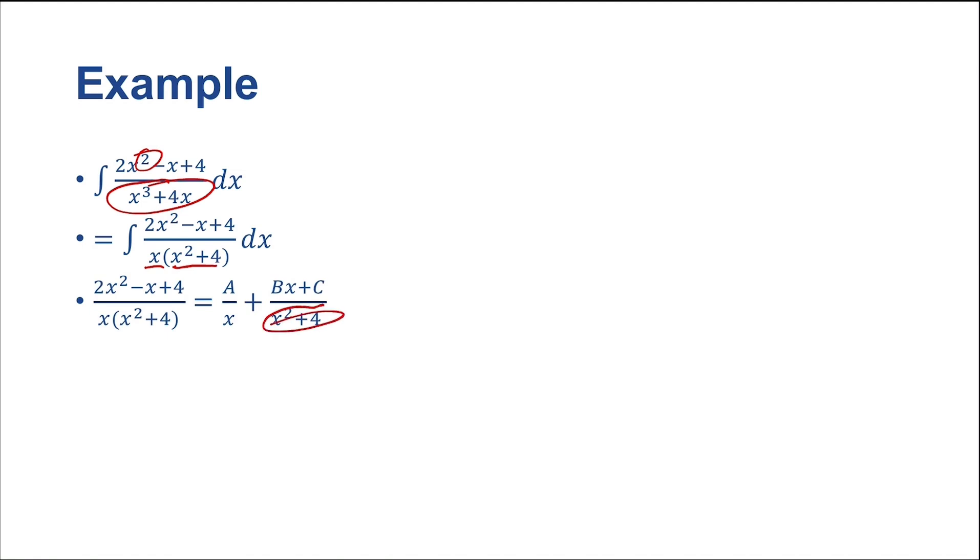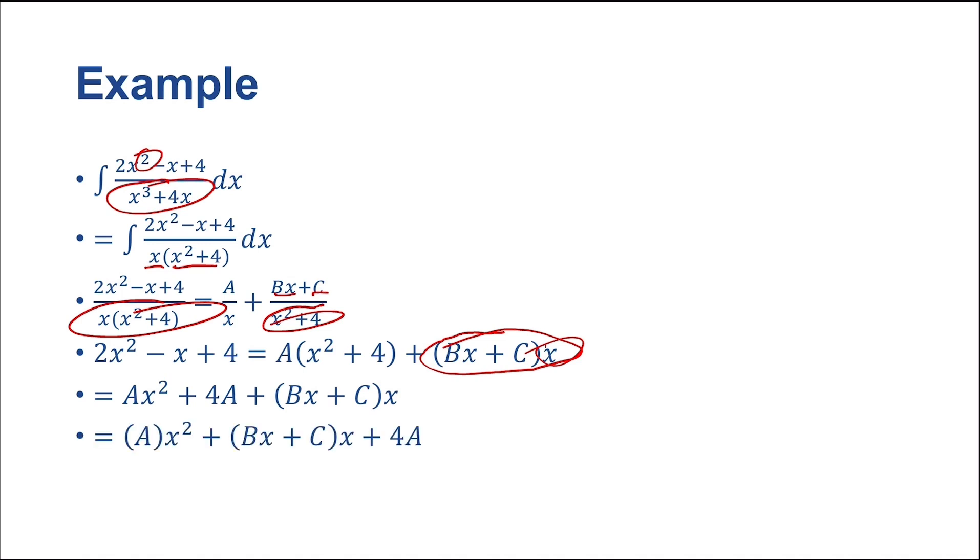So when you've got these quadratic factors, you do a constant x plus constant. So now what we want to do, as always, is we want to multiply by the lowest common denominator, which is going to be this guy here. So we get 2x squared minus x plus 4 is equal to A times x squared plus 4 plus Bx plus C all times x. And this is nice, because we'd like it when we have these all in with our little order term there, because then we can map those back to our left-hand side. But we would like to expand this A times x squared plus 4 term. So we get Ax squared plus 4A plus Bx plus C all times x, and then we can consolidate again.